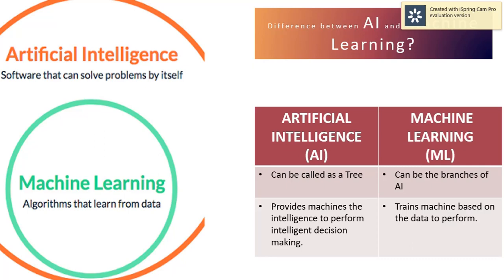In AI, machines are made self-capable of doing decision making. On the other hand, in machine learning, machines are trained with a set of data and a logic to perform certain tasks. We will definitely dive deeper into this topic in the upcoming videos, but for now this is the basic difference between them.